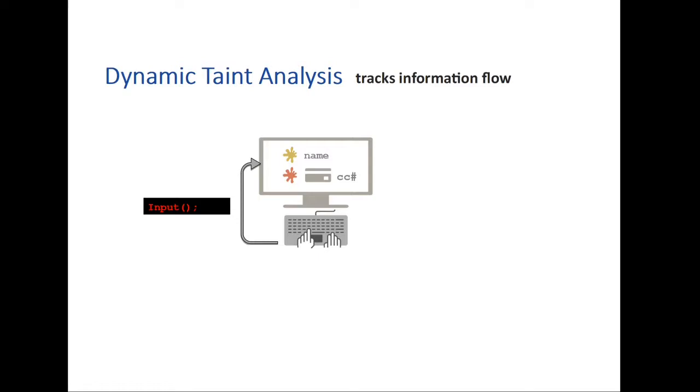Then we try to trace this labeled data, or we call them taints, throughout the program execution. And finally, we try to prevent these taints going to untrusted channels in insecure ways. For instance, going to network, or user terminal, or to database system, or external devices.